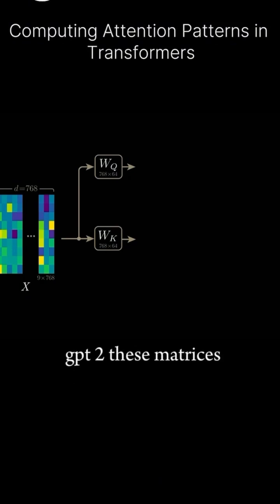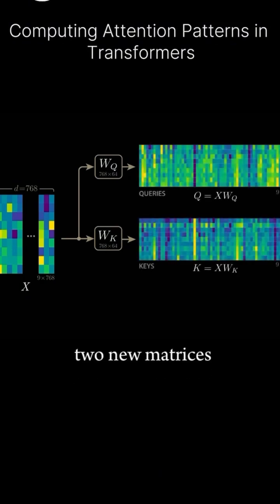In GPT-2, these matrices are of dimension 768 by 64 and result in two new matrices, Q and K, each of dimension 9 by 64.